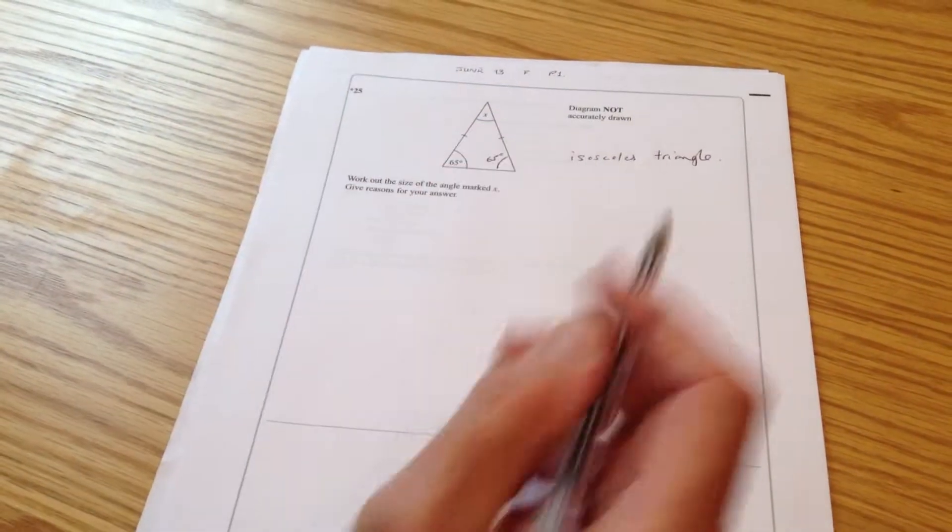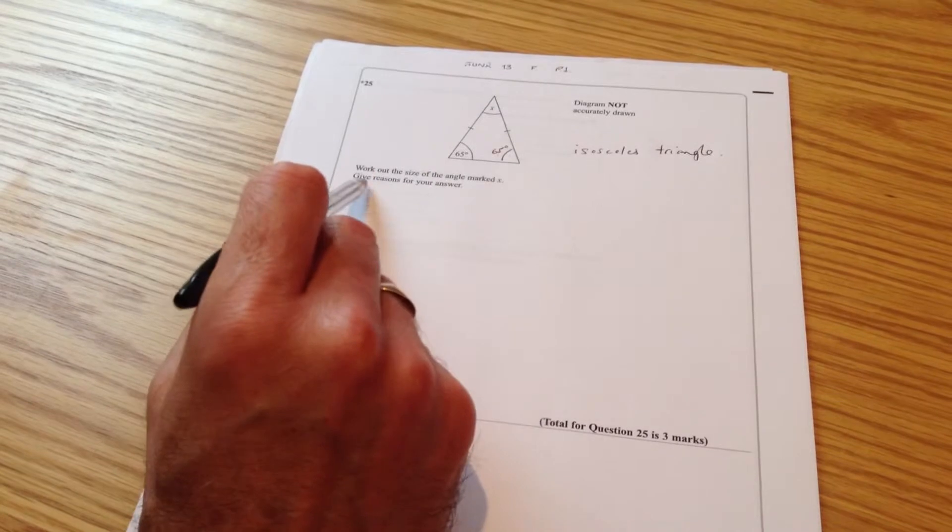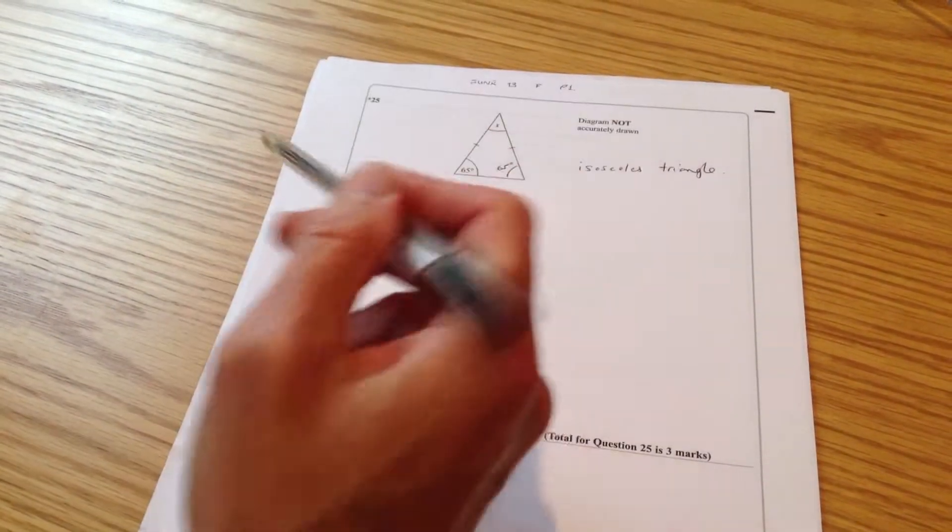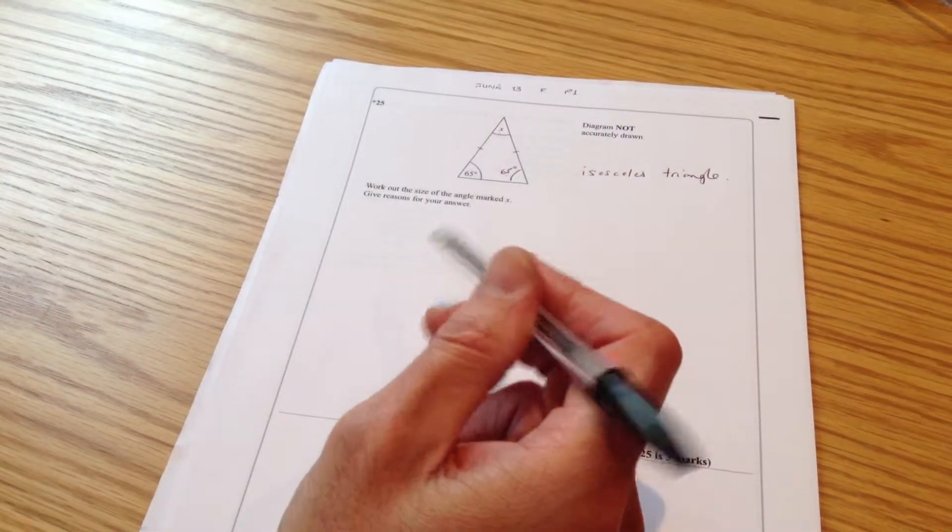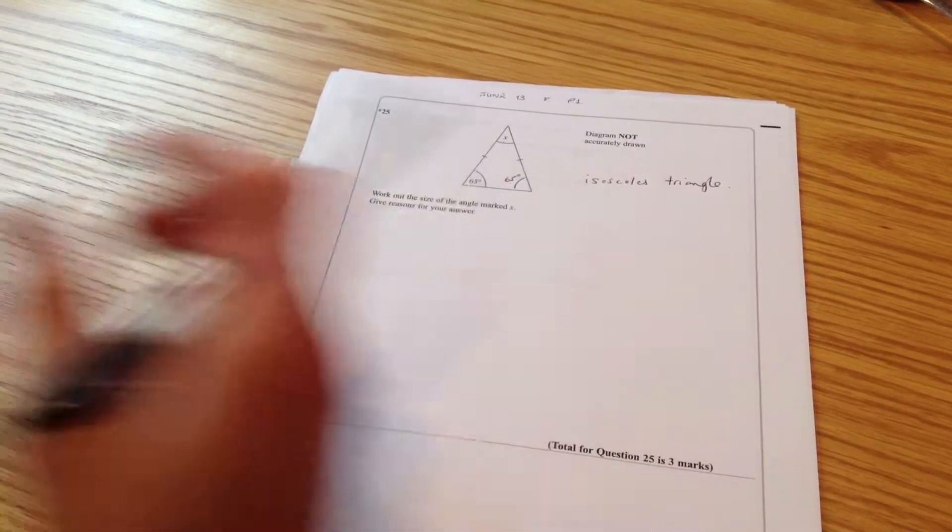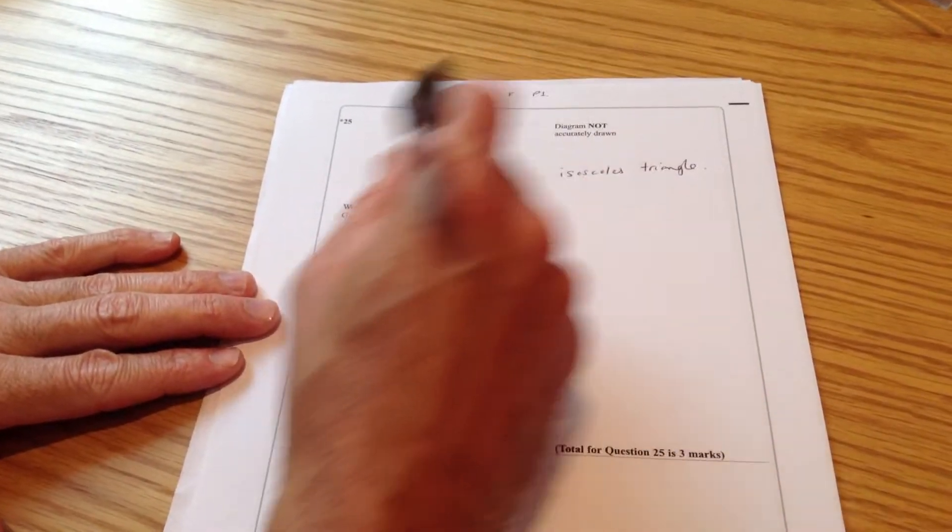Now before I rush on ahead, this question also says give reasons for your answer. So you can't just steam ahead and work out the missing angle. You've got to give reasons. Now I've mentioned some so far. I've got to write them down in a coherent way that makes sense. So here we go.